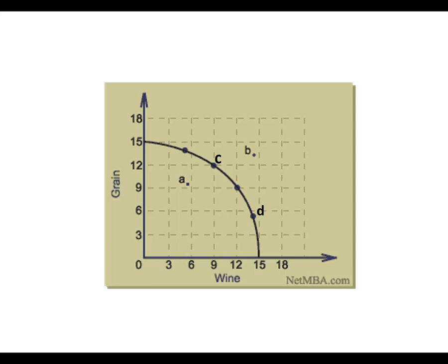Point C is twelve units of grain and nine units of wine. Point D is fourteen units of wine and five units of grain. Moving from C to D, we gain wine but give up grain — going from twelve to five units of grain, so we give up seven units of grain. For another example: moving from point G to point E, I gain nine units of grain but give up three units of wine. So the opportunity cost of moving from G to E is three units of wine.